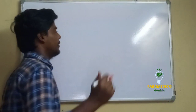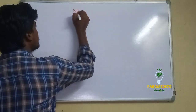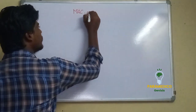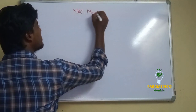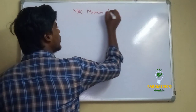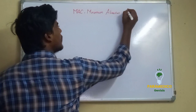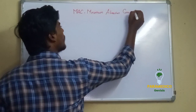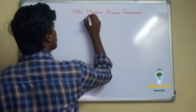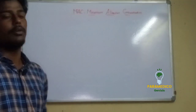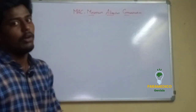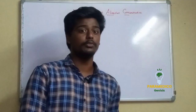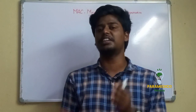This is Minimum Alveolar Concentration. It's MAC — M-A-C. Minimum Alveolar Concentration. In the MAC definition, what is that?